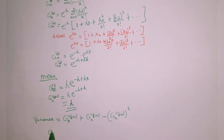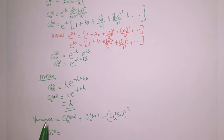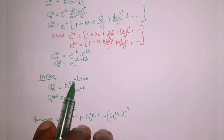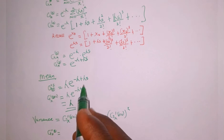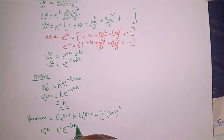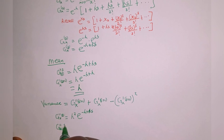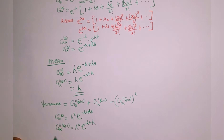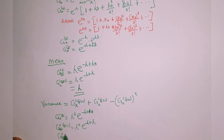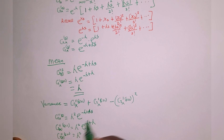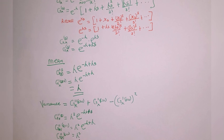The second derivative G sub X double prime of s is obtained by differentiating once more. Differentiating lambda times e raised to the power of minus lambda plus lambda s with respect to s gives lambda times lambda, which is lambda squared, times e raised to the power of minus lambda plus lambda s. Evaluating at s equal to 1: minus lambda plus lambda equals zero, e to the power of zero is 1, so the second derivative at s equal to 1 equals lambda squared.